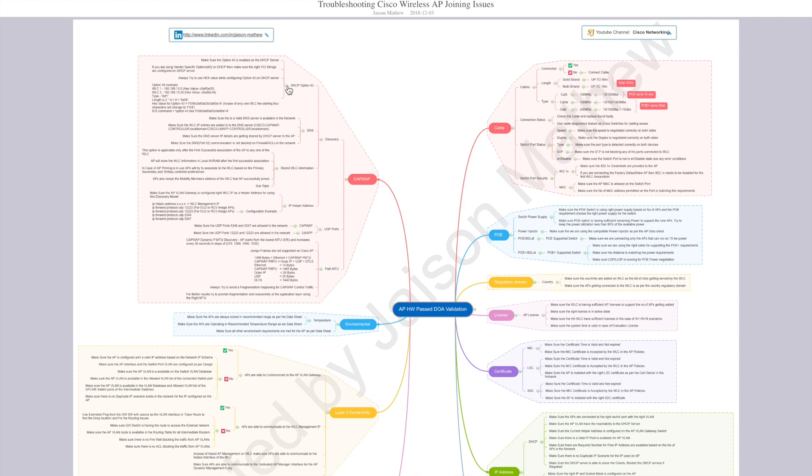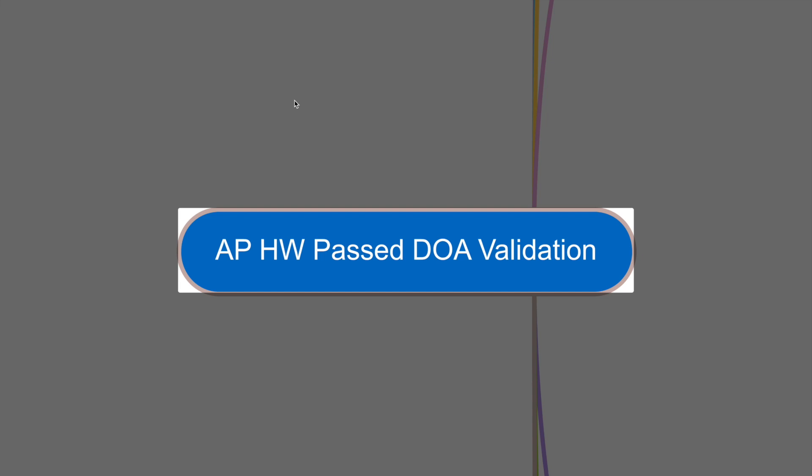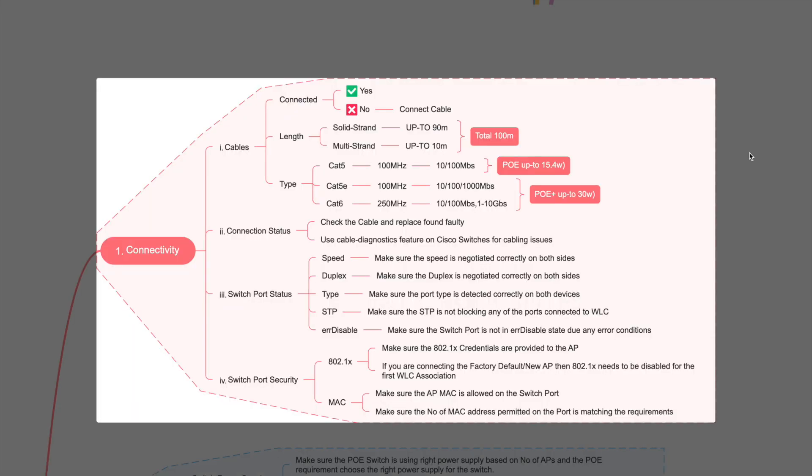Let's get started. First thing in AP troubleshooting — make sure you don't have any physical damage on your device. If you're shipping from a warehouse to a site location, there's a chance devices are damaged in transit. DOA means dead on arrival — just make sure there is no physical damage on your AP hardware. Once the DOA check is passed, we move to the next step.